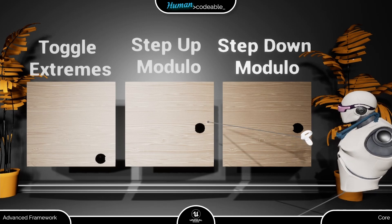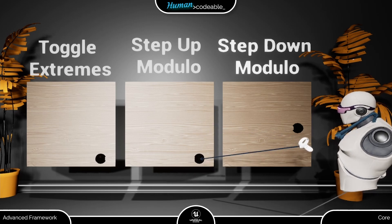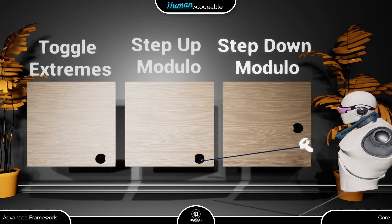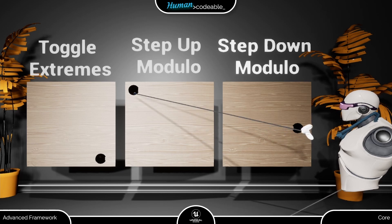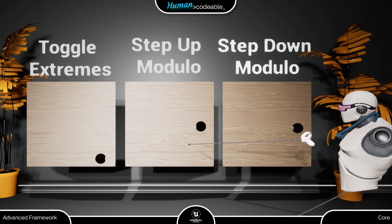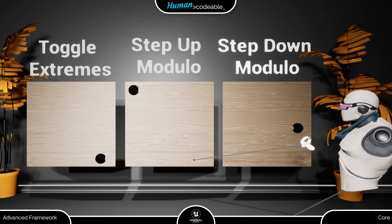Let's go to the step-up modulo. It's a bit more sophisticated — finding the section with the next higher value compared to the current section and moving the draggable mesh there. And upon arriving at the highest section, the draggable mesh goes back to the lowest with the next select.